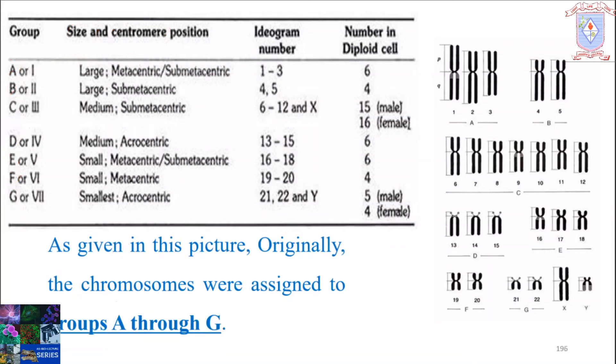Group A includes the first three chromosomes, chromosome numbers 1, 2, and 3. They are large metacentric or submetacentric chromosomes. They are large in size and the centromere position is metacentric or submetacentric.